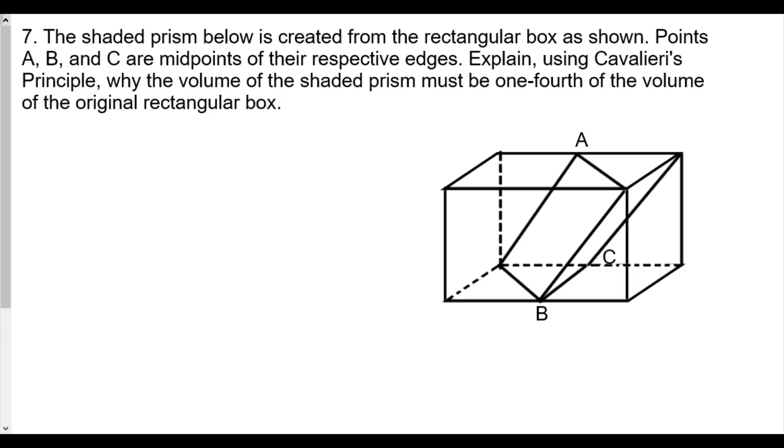This is question 7, and so we have no numbers. It says here the shaded prism below is created from the rectangular box as shown. Points A, B, and C are midpoints of their respective edges. Explain, using Cavalieri's principle...